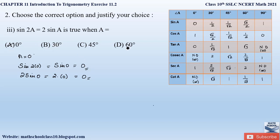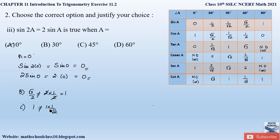We can verify the other options. Option B: a = 30°. LHS: sin 60 = √3/2. RHS: 2 sin 30 = 2 × (1/2) = 1. Not equal, so option B is incorrect. Option C: a = 45°. LHS: sin 90 = 1. RHS: 2 sin 45 = 2 × (1/√2), which is not equal to 1. Option C is incorrect. Option D: a = 60°, giving sin 120, which is outside the standard table range — also incorrect. So the correct answer is option A, a = 0°.